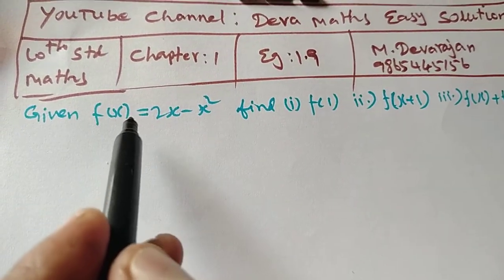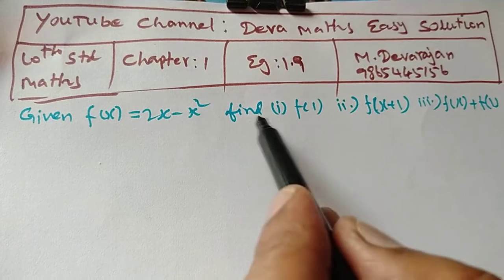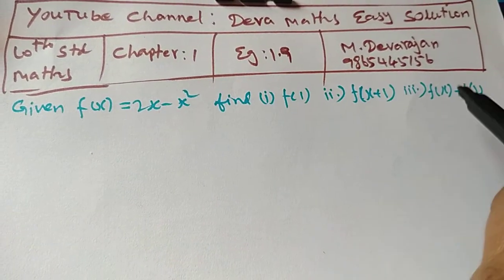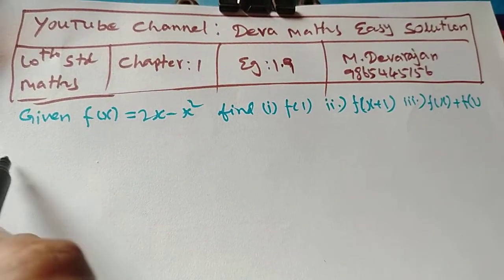Given f of x equal to 2x minus x square, find f of 1, f of x plus 1, and f of x plus f of 1.